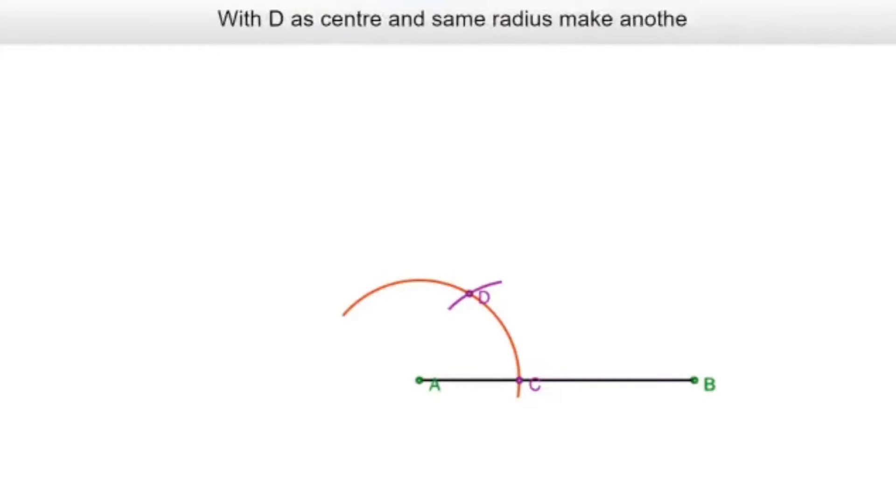Then with D as center and again without changing the radius I cut another arc to intersect the main arc at point E. So if I join A and E I will get an angle of 120 degrees.